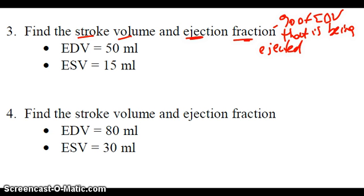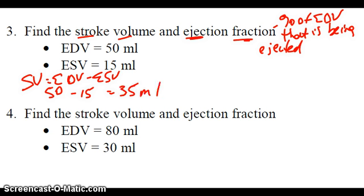First thing we have to do is find the stroke volume. Stroke volume is EDV minus ESV. So 50 minus 15 equals 35 ml. That's our stroke volume.